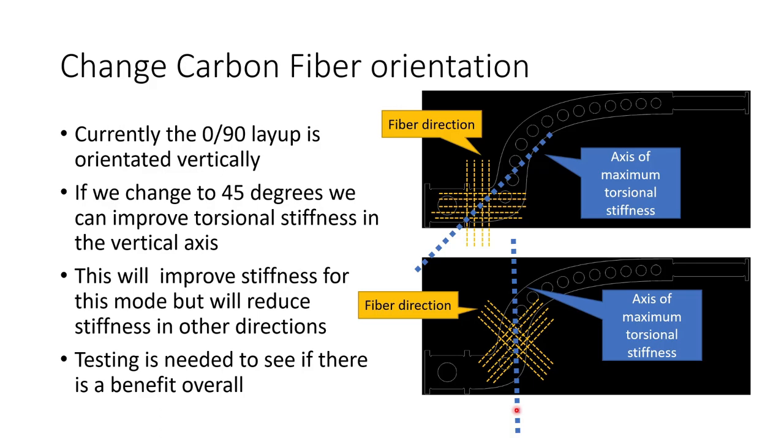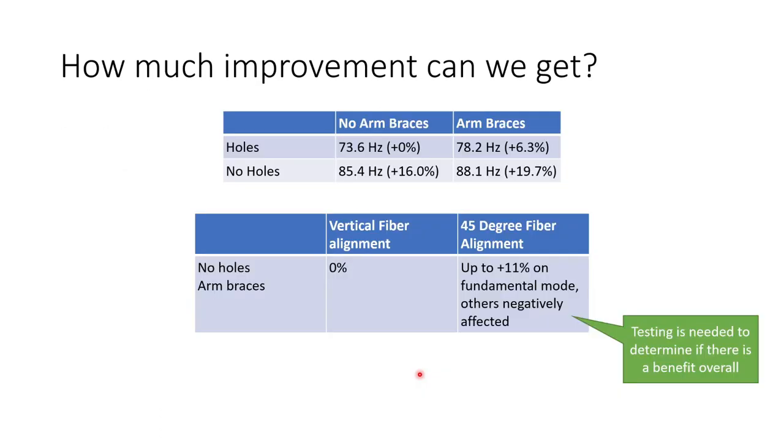And this is not free performance improvement because although we're going to improve the torsional stiffness on this axis we're going to do it at the expense of reducing stiffness in other directions. So there's a risk here that while we may improve the resonant mode that we're specifically targeting we might end up shooting ourselves in the foot and making other things much much worse. And so we need to do experimental testing of this to see if there is an overall benefit change in the carbon fiber orientation.